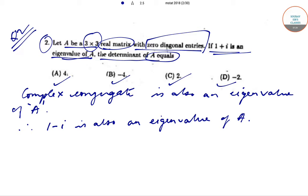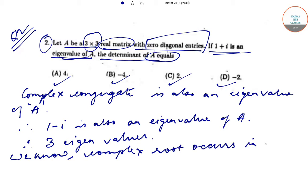We know that complex roots occur in pairs. Since it is a 3×3 matrix, there are three eigenvalues. Complex roots occur in pairs, so there can be at most two complex roots. We have already seen that 1+i and 1-i are complex roots, so the third eigenvalue should be a real value.